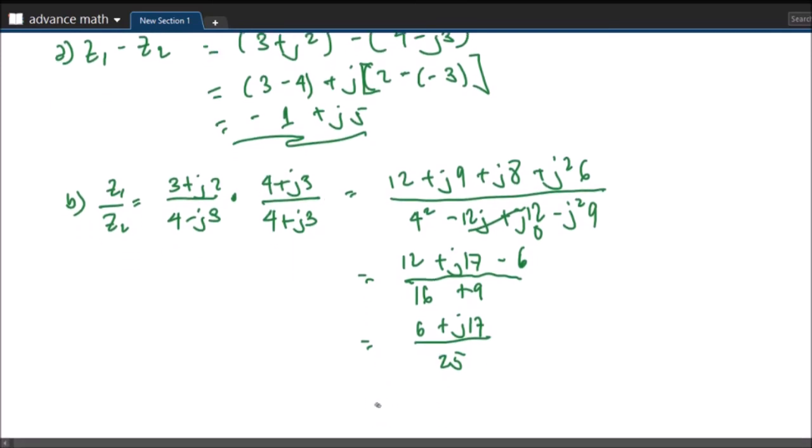So we will have 6 over 25 plus J17 over 25. And this is now our answer.